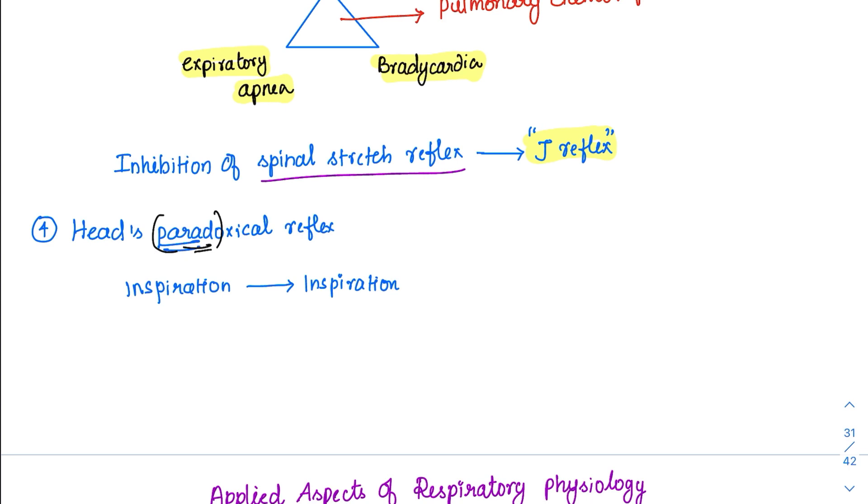This happens physiologically or happened physiologically in all of us at some point of time. It is during childbirth. During the childbirth, the child tries to open up its alveoli. At that time, this inspiration will cause more and more inspiration and help the alveoli to open up from a collapsed state. That is called Head's Paradoxical Reflex.